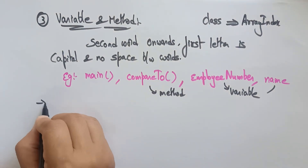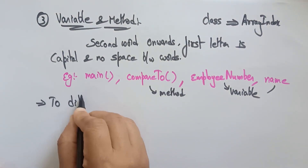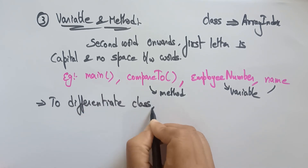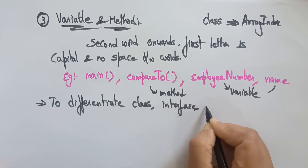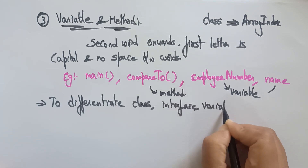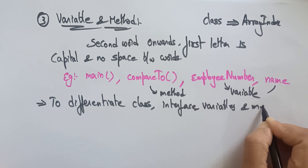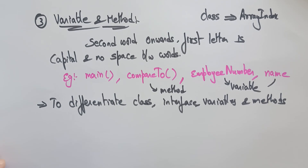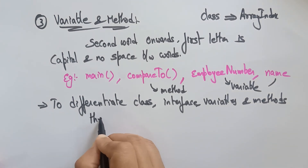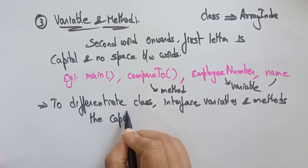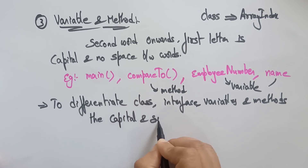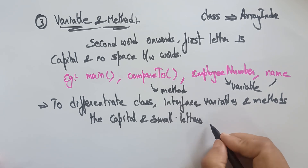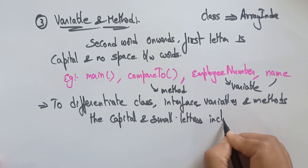To differentiate class, interface, variables, and methods, the capital and small letter concept has been included. That's why capital and small letters are used — otherwise we can't understand which is a class, which is a variable, and which is an interface. This concept is included specifically for that differentiation.